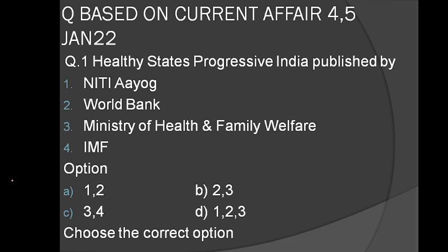If you read today's newspaper, you will find Niti Aayog, World Bank, and Ministry of Health and Family Welfare listed as publishers. So the correct option is one-two-three.